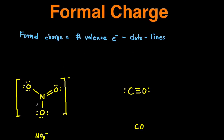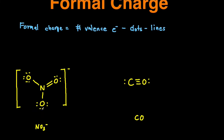Next I'm going to show you a couple examples to reinforce the point. The first one we're going to look at is nitrate. To calculate formal charge you have to have the Lewis dot structure — either you'll be provided with it or you will have to draw it. If you're struggling with drawing Lewis dot structures you can take a look at my video on how to draw that.